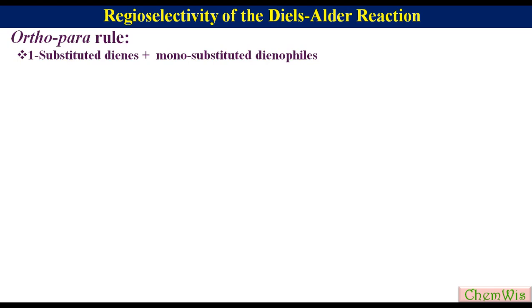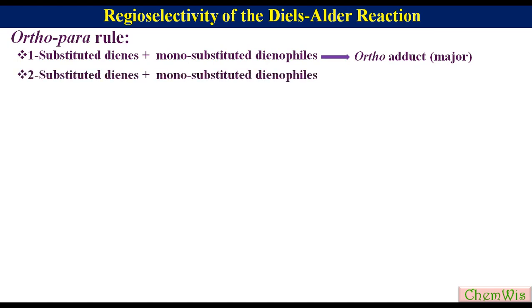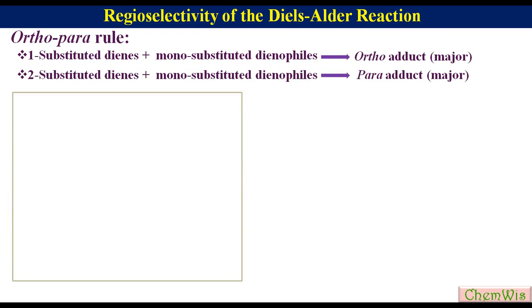In general, 1-substituted dienes and mono-substituted dienophiles react to give the ortho adduct as the major product. 2-substituted dienes and mono-substituted dienophiles react to give the para adduct as the major product. Let's understand these points with the general structure.